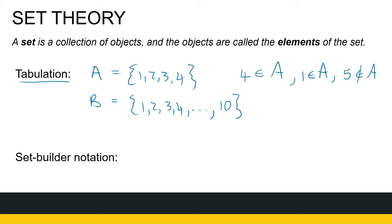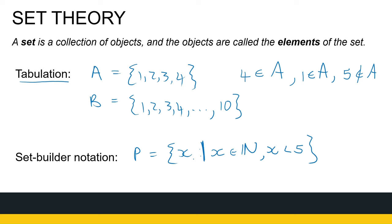Now the next way to represent a set is called set builder notation. For that, we give you a way how the set is built. So I say the set P is the set of all the numbers X, given X is a natural number and X is less than 5. So rather than tabulate it, I give you a description of what the elements of the set look like. This line I drew here means 'given that' — sometimes a colon is used as well. This set can be tabulated because it's just natural numbers less than 5, so that's 1, 2, 3, and 4.